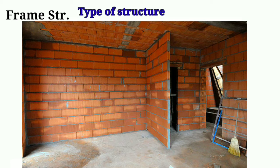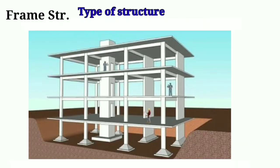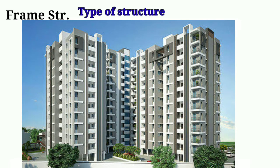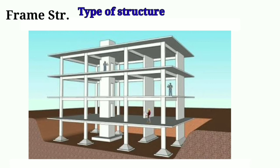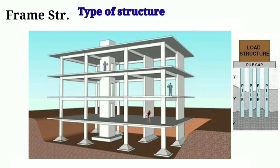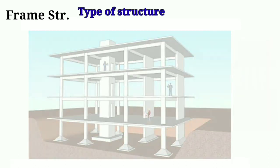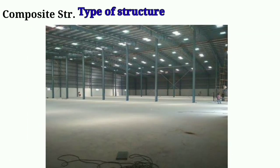In frame structures, the wall does not carry any load except its own weight — it is constructed only to enclose the area. Since the wall thickness is much less compared to load bearing structures, frame structures are economical for multi-storey construction and the speed of construction is much faster. Frame structures may be steel structures or RCC structures, and are suitable where hard strata is available at greater depth, as they can accommodate pile foundations. Nowadays, all necessary structures are made using frame structures.